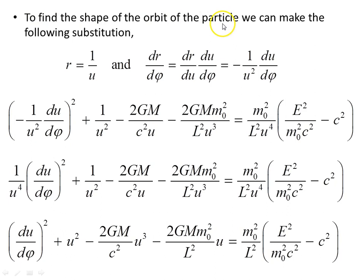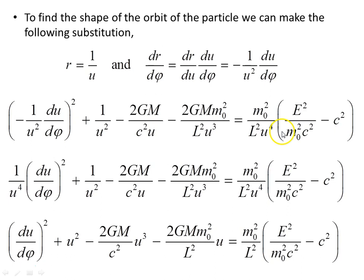We can find the shape of the orbit by making the substitution r = 1/u, also used in Newtonian mechanics. Using the chain rule, dR/d-phi gives us dR/d-u times d-u/d-phi, and since r = 1/u, dR/d-u is minus 1 over u squared times d-u/d-phi. Substituting that into our previous equation and working through, we get 1 over u squared times this object, plus energy and mass terms of angular momentum on the right, and d-u/d-phi all squared gives us this object here.